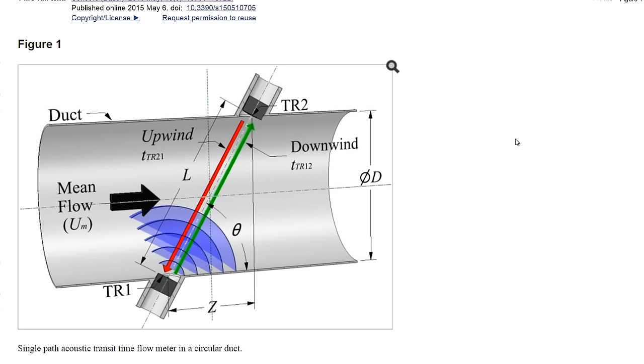I decided on a single path acoustic transit time flow meter because getting the correct angles on both sides will be easier.